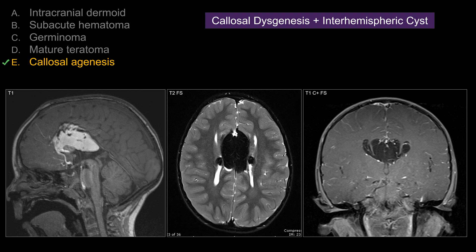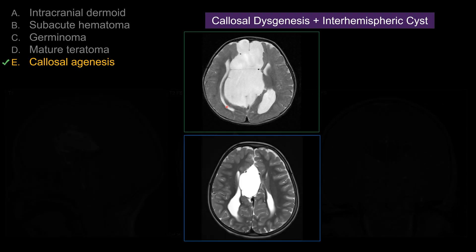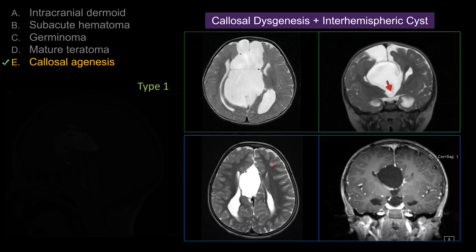For interhemispheric fissure cysts, here are two examples. Both show parallel appearance of the lateral ventricles as well as dilatation of the atrium and occipital horn — so colpocephaly. There are two types of interhemispheric cysts, type 1 and type 2. Type 1 refers to when the cyst is communicating with the third ventricle — essentially a diverticulum of the third ventricle. Type 2 is when you do not see communication between the cyst and the ventricular system.